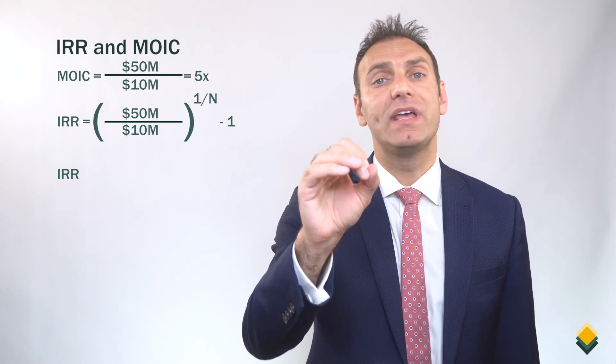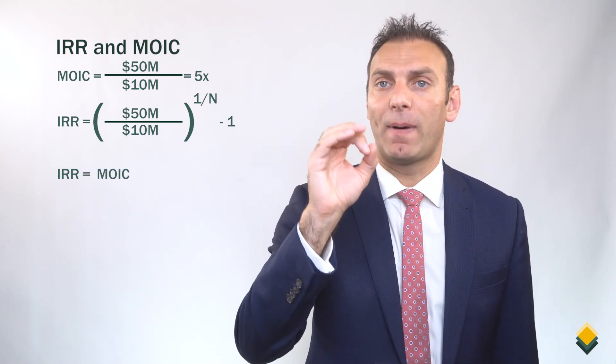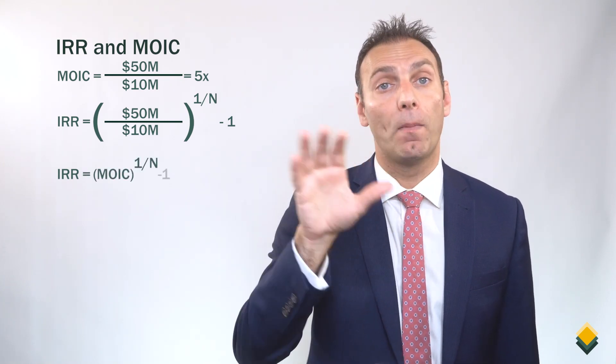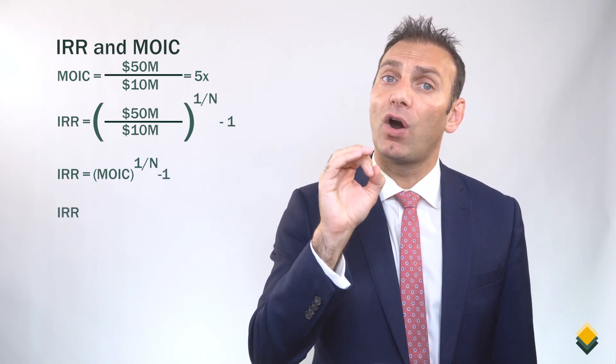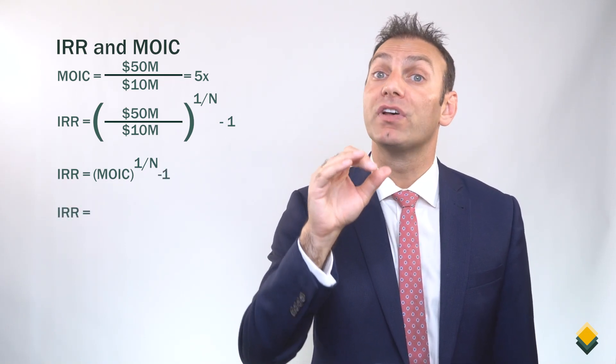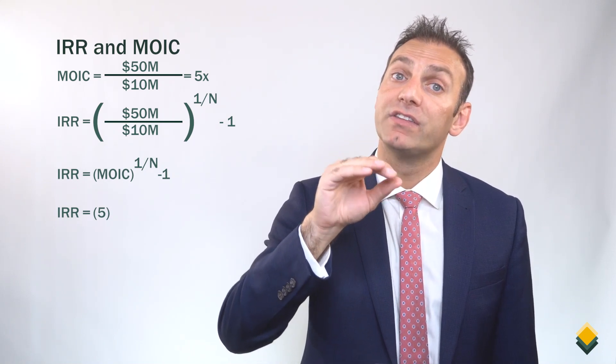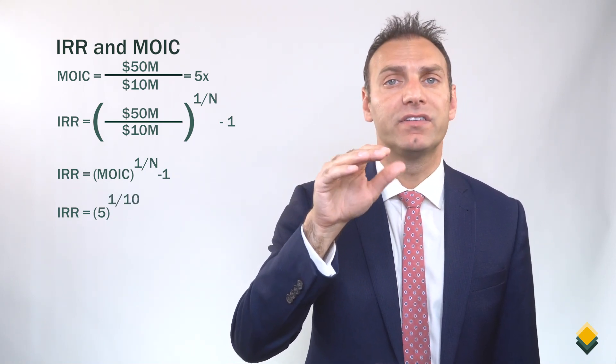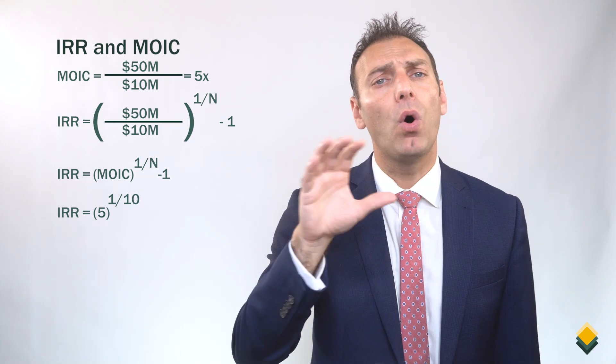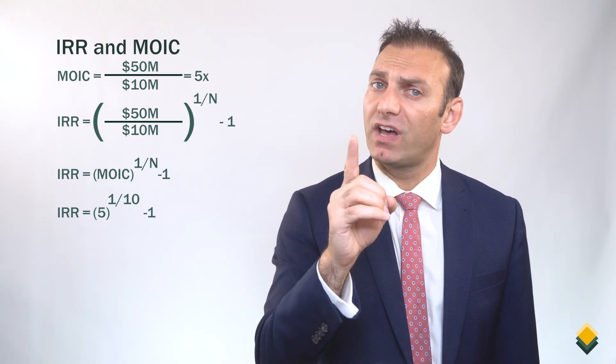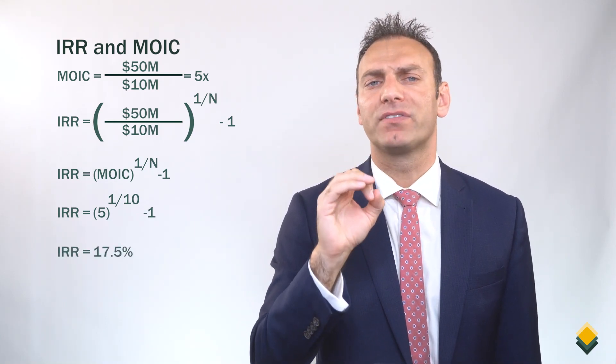By substituting MOIC into the IRR equation, IRR equals MOIC to the power of one over N, all minus one. Solving for IRR: 5 (since MOIC is 5) to the power of one over 10 (since the investment is for 10 years), all minus one, which gives us 17.5%. If this sounds complicated, no problem — please check out our video titled IRR and MOIC, where we break this down using a simpler example.